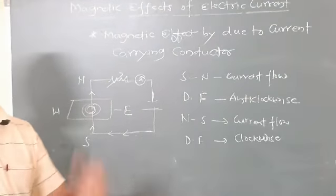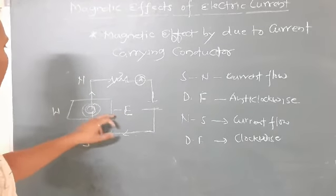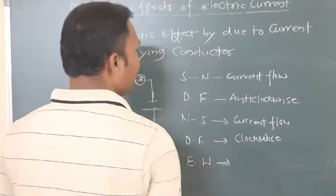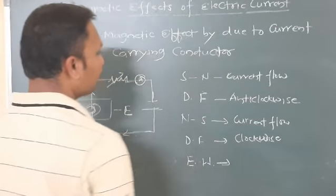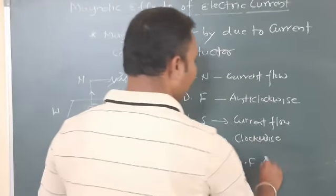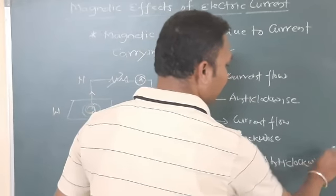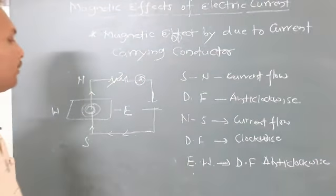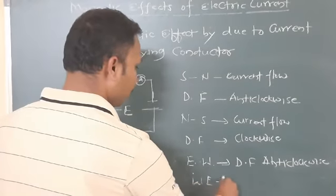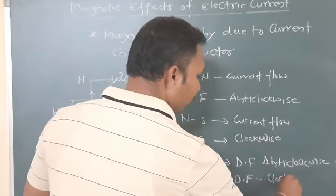One more point: if the current is flowing from east to west, the direction of the magnetic field is anticlockwise. If the direction of current is west to east, the direction of the magnetic field is clockwise.